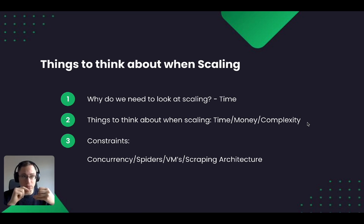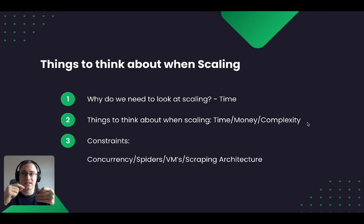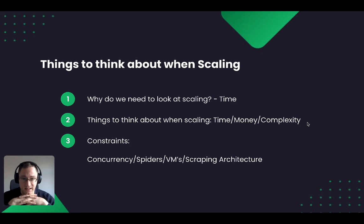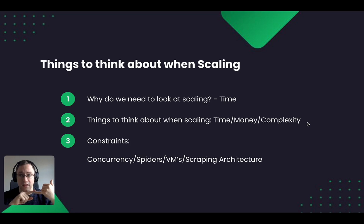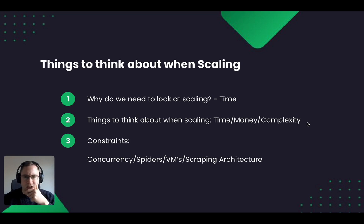You have to think about how quickly you need this to happen and how many resources you need to get the result you want. You also have to think about cost, because you're going to be running more spiders which means more VMs — virtual machines — and potentially, if you're scraping sites that need proxies, that's going to cost more in terms of the concurrency you need from your proxy providers.